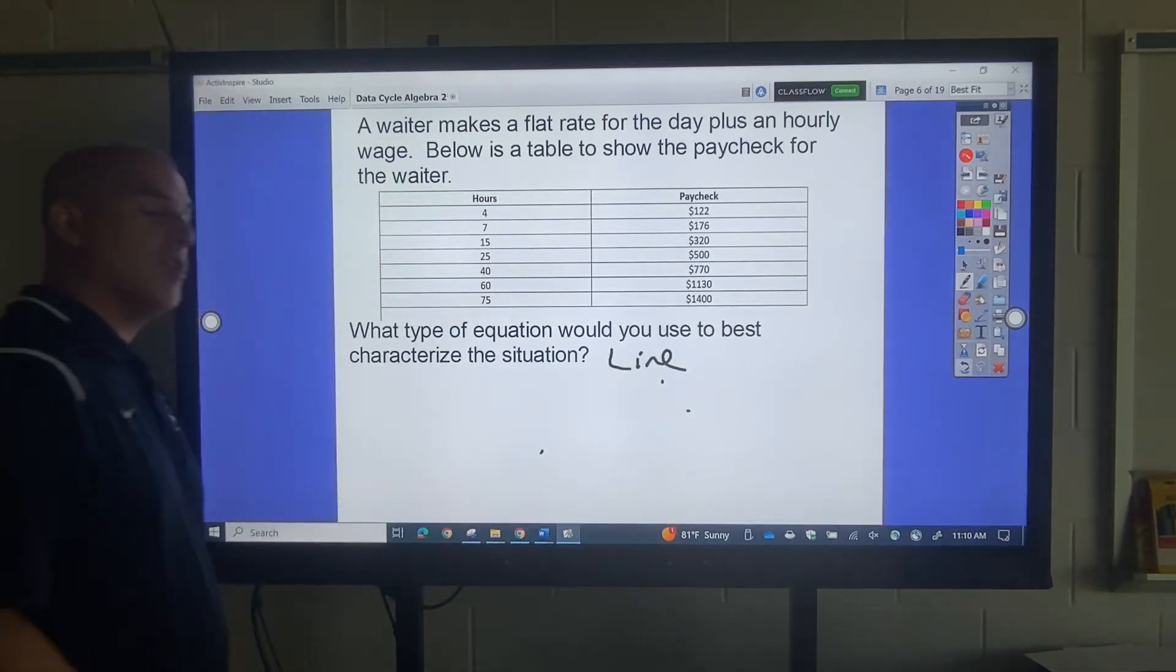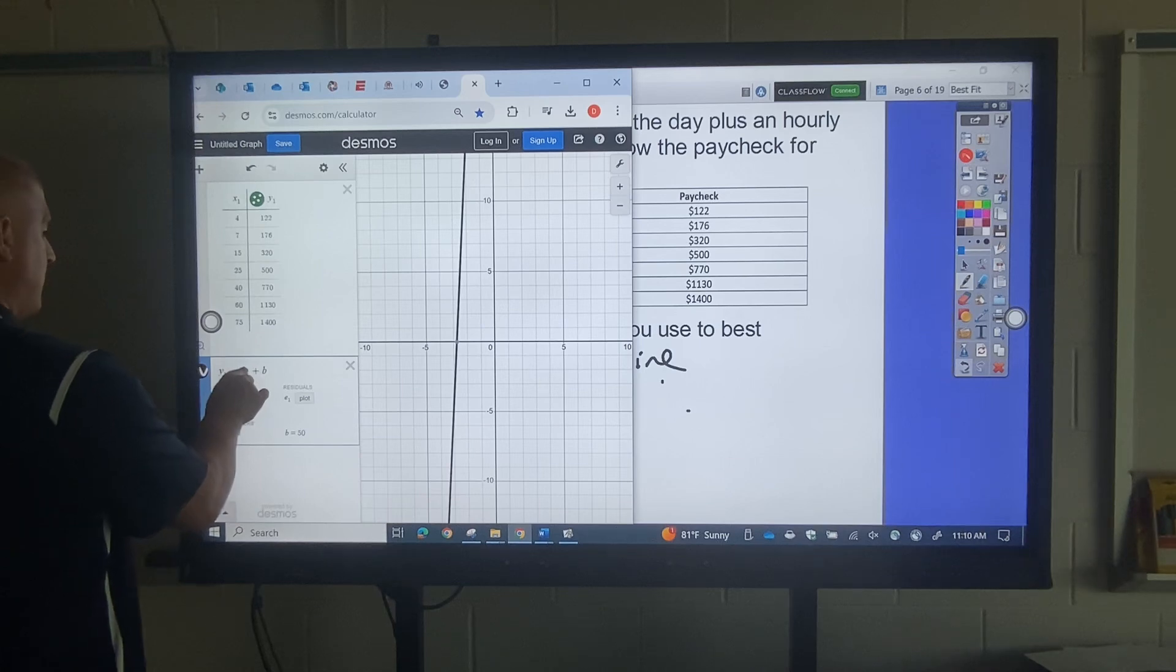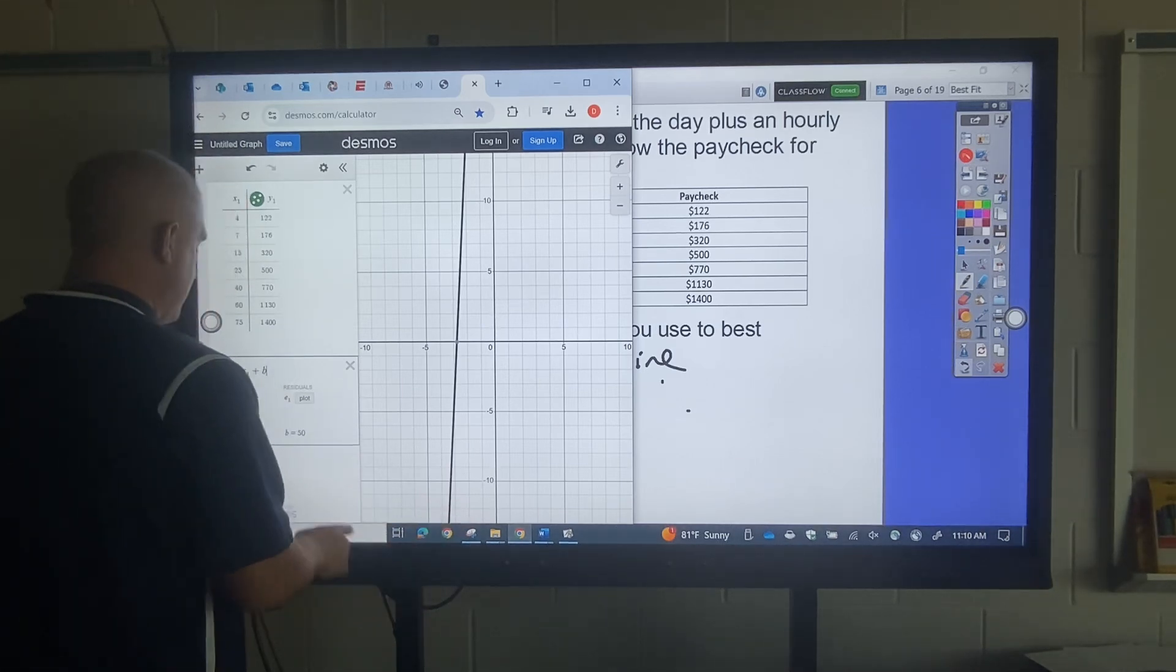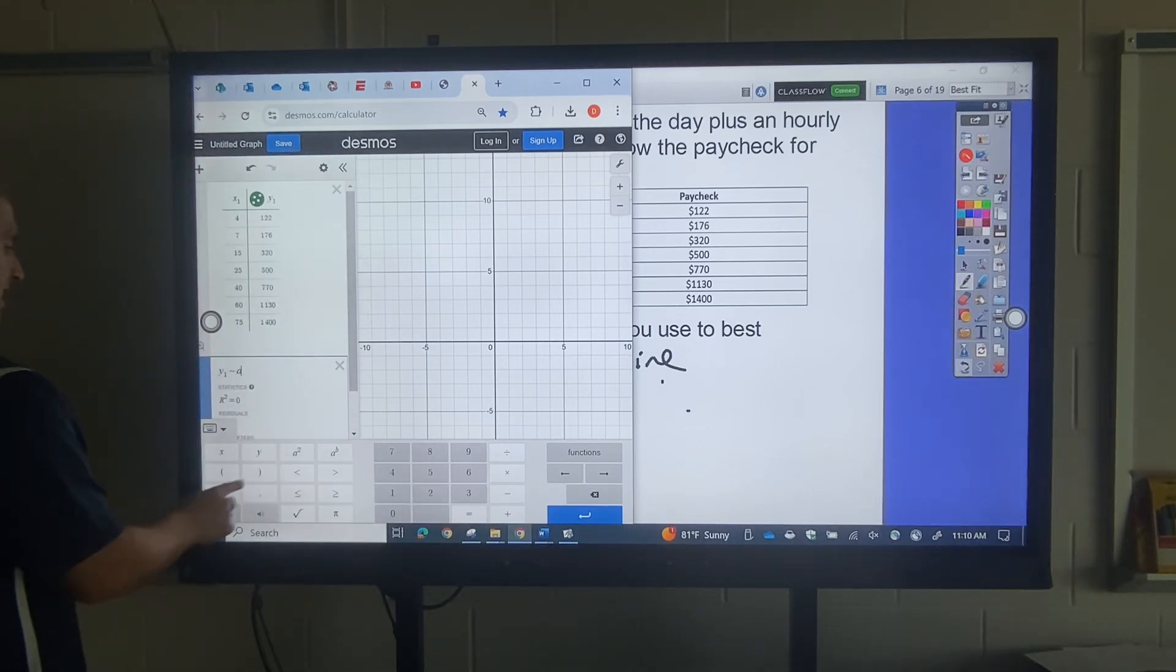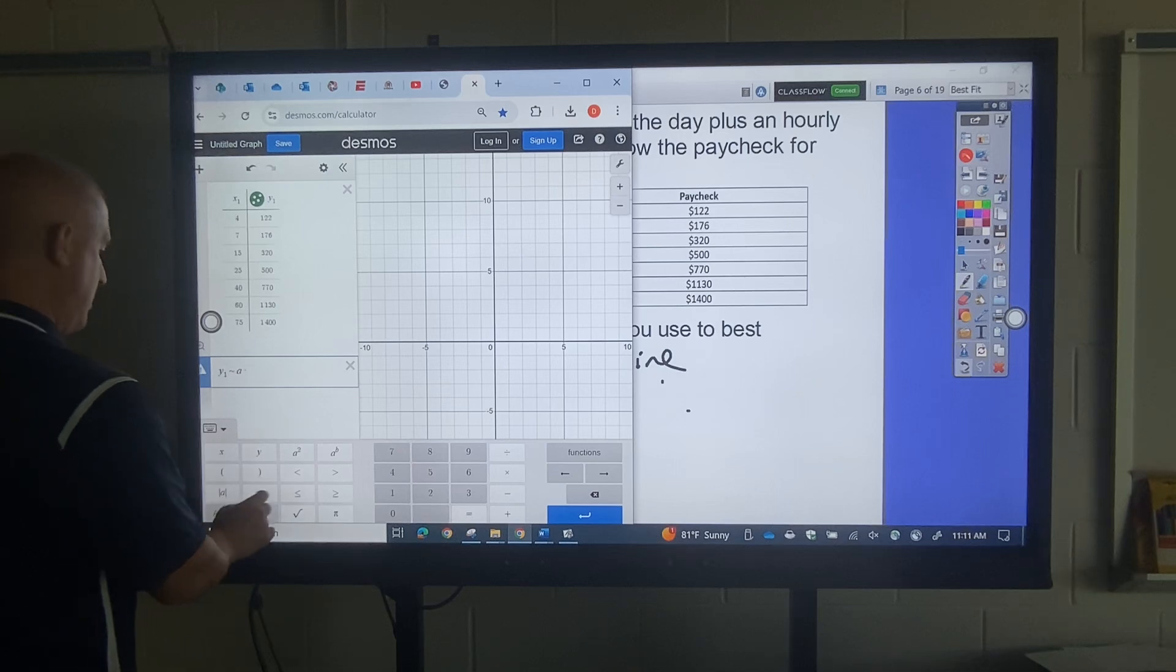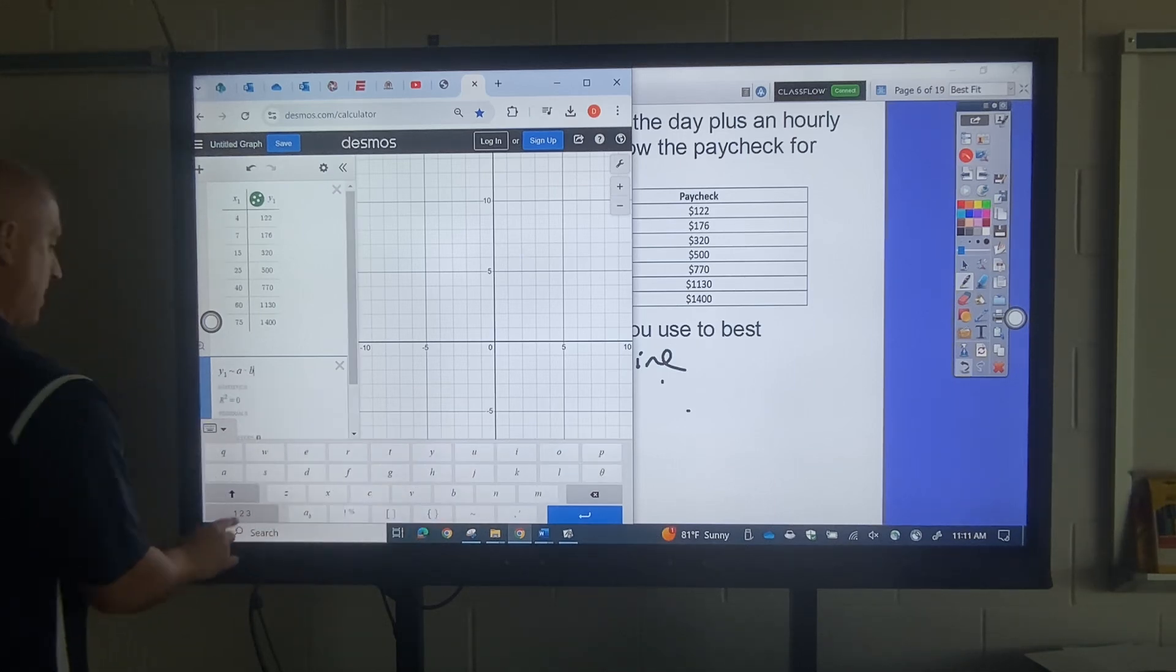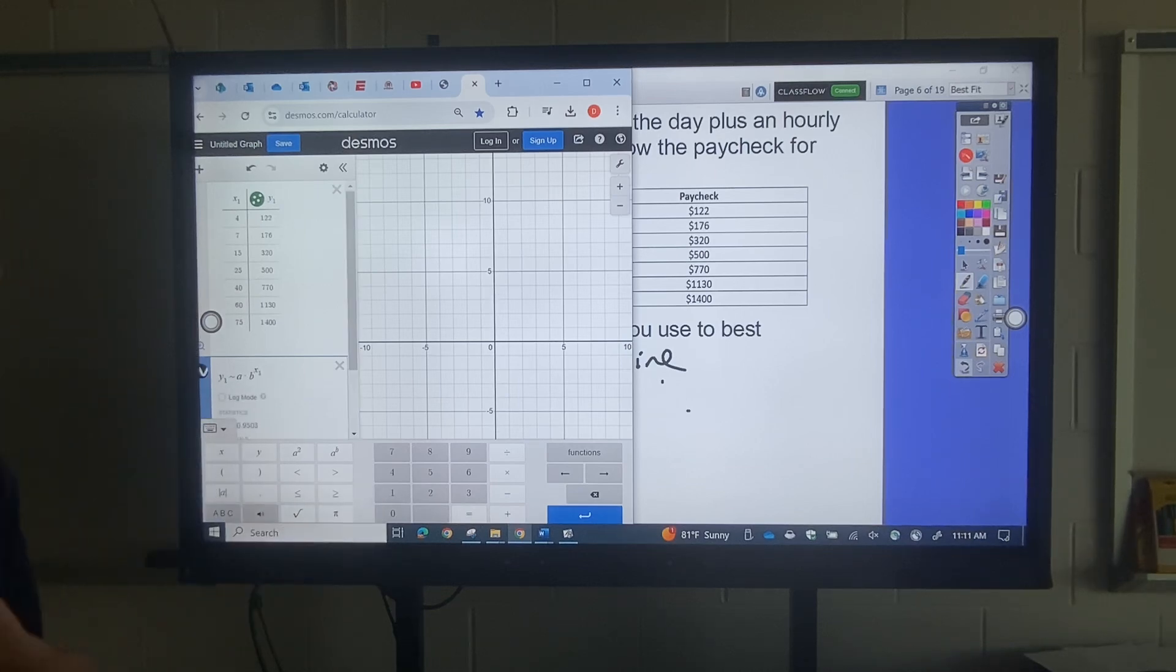Later on, we're going to go back and calculate the equation. Now, so we say, well, Mr. Evans, what if I put something else? Let's say I use the exponential one, which the exponential one is A times B, and then exponent is right here, exponent X1. Now, I want to show you the R squared, as you see, is not close to 1. It's close, but not closer than 1, and that's how you know.